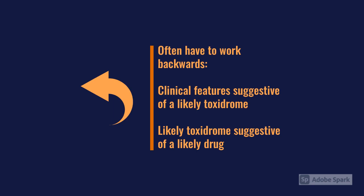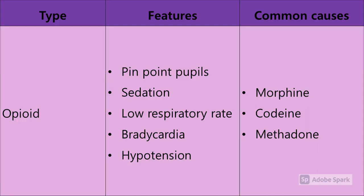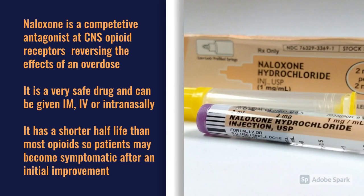Opioids are a very common drug to overdose on - morphine, codeine, methadone, heroin, and fentanyl patches. You'll see a low GCS, low respiratory rate, bradycardia, hypotension, and classically pinpoint pupils. When doing your A-to-E assessment, these are the features to look for. The antidote is naloxone - brand name Narcan - a very safe drug. We normally recommend 400 micrograms IV, but it can be given IM with a slower uptake.